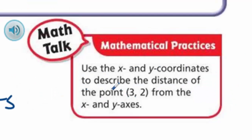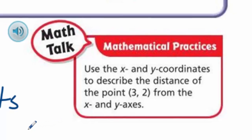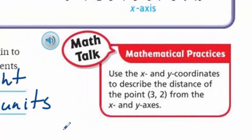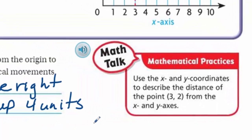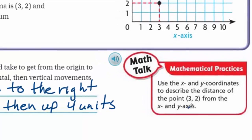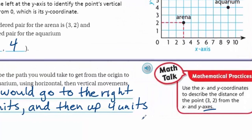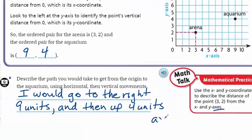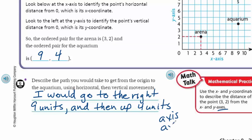Math Talks: use the x and y coordinates to describe the distance of the point (3, 2) from the x and y axes. The x-coordinate tells me I'm going to go horizontally three units to the right, and the y-axis tells me to go up two. By the way, axes is plural for axis.